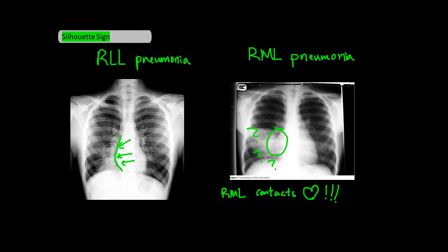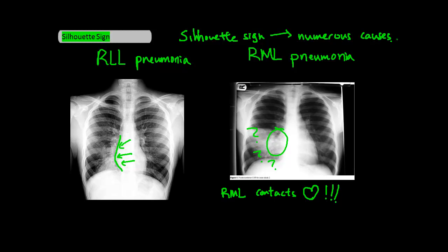The silhouette sign doesn't just happen with pneumonia and heart borders. It happens whenever any two areas of normally different densities become similar in density, which can happen due to a variety of causes such as lung collapse (aka atelectasis), pneumonia, fluid, cancer, etc.